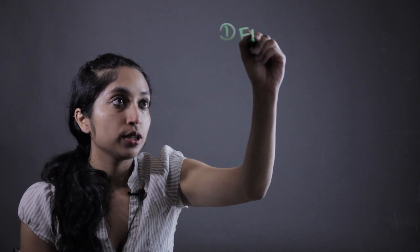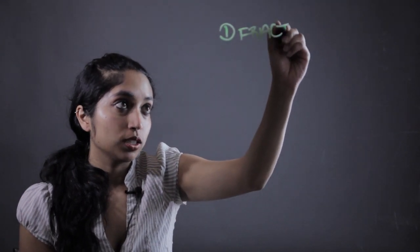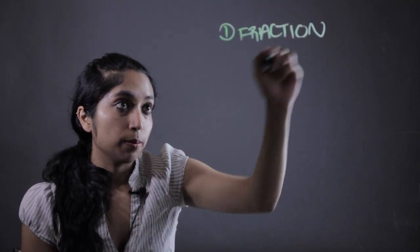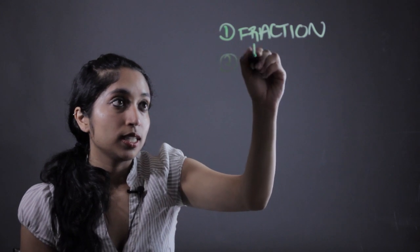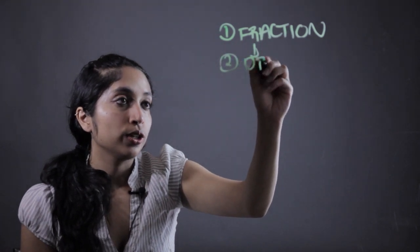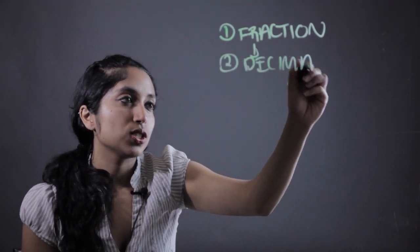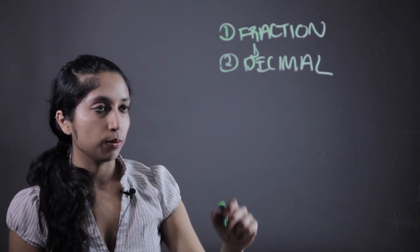So the first thing you're going to want to do is turn the remainder into a fraction. And then our second step is going to be taking that fraction and turning it into a decimal. Just something we should already know how to do at this point, super simple.